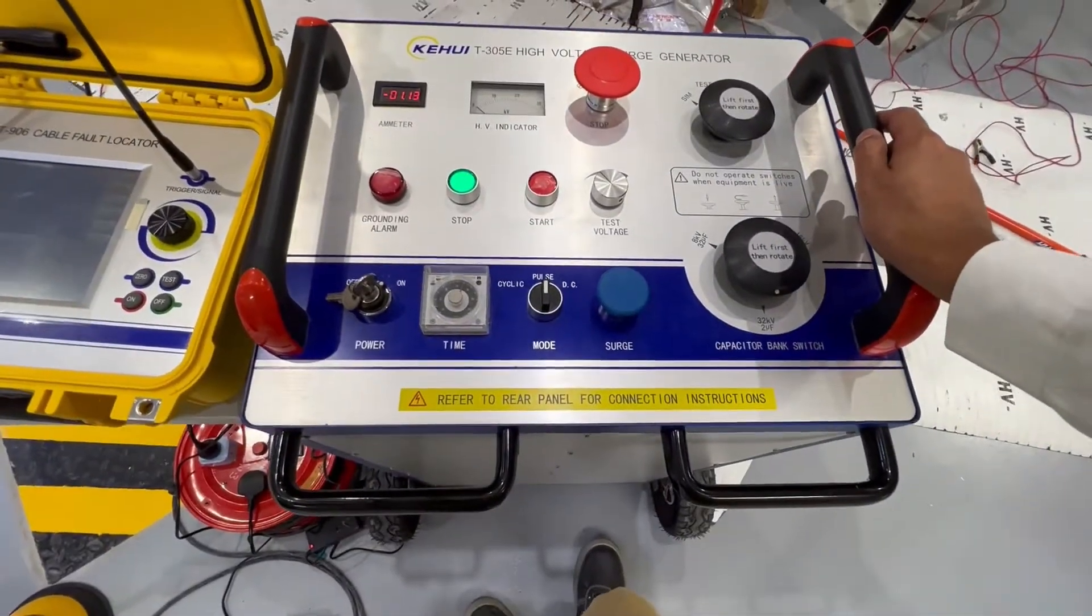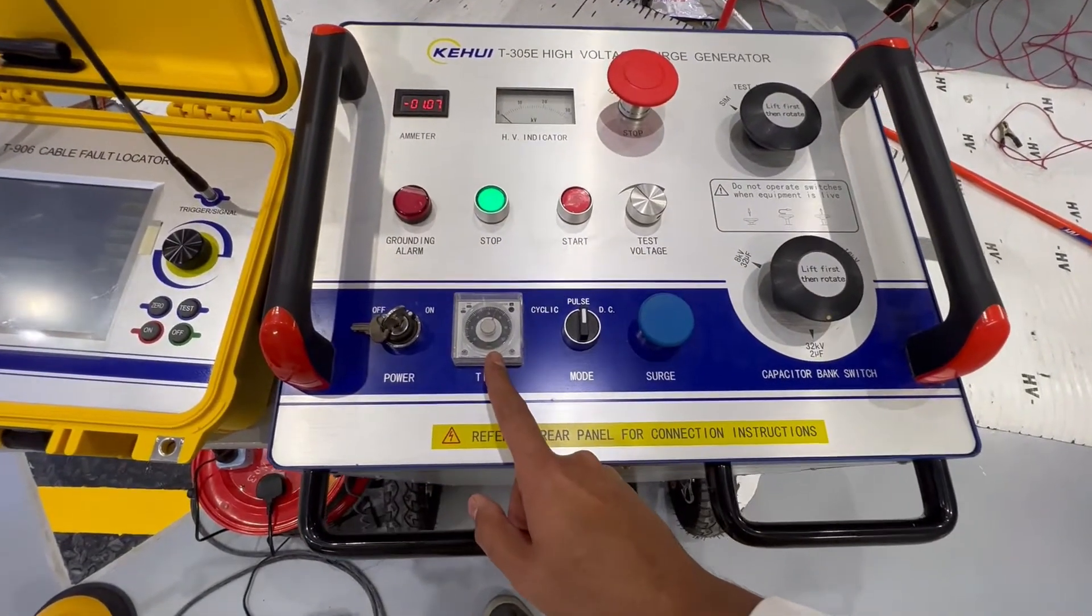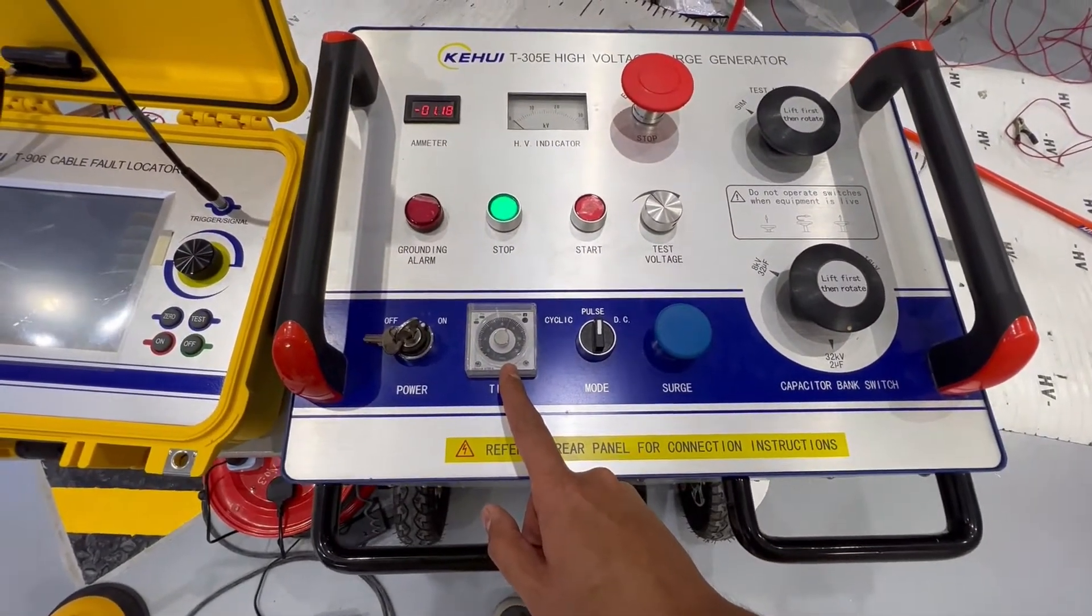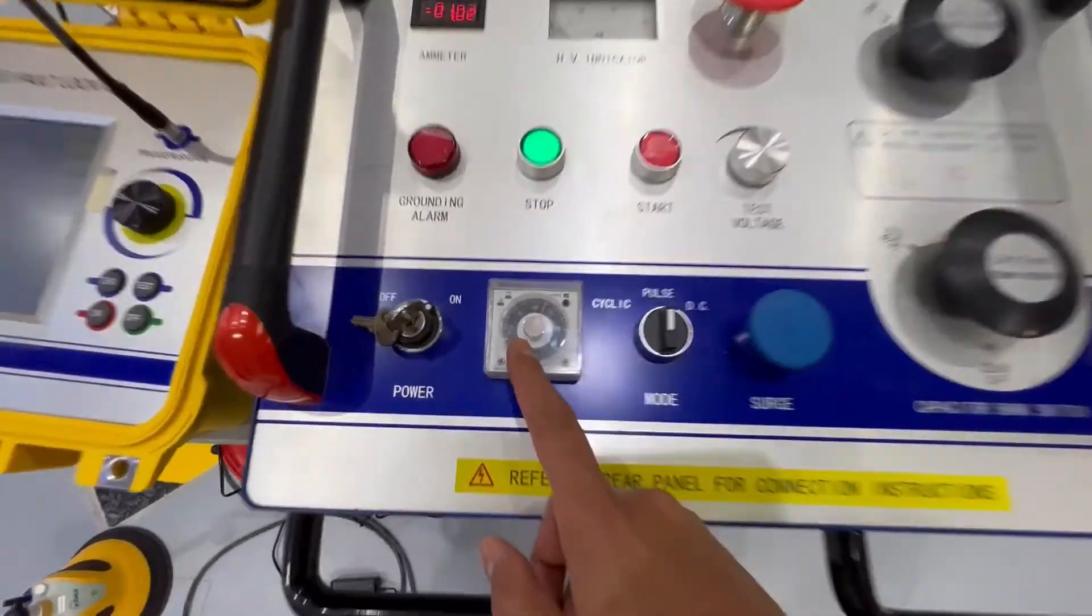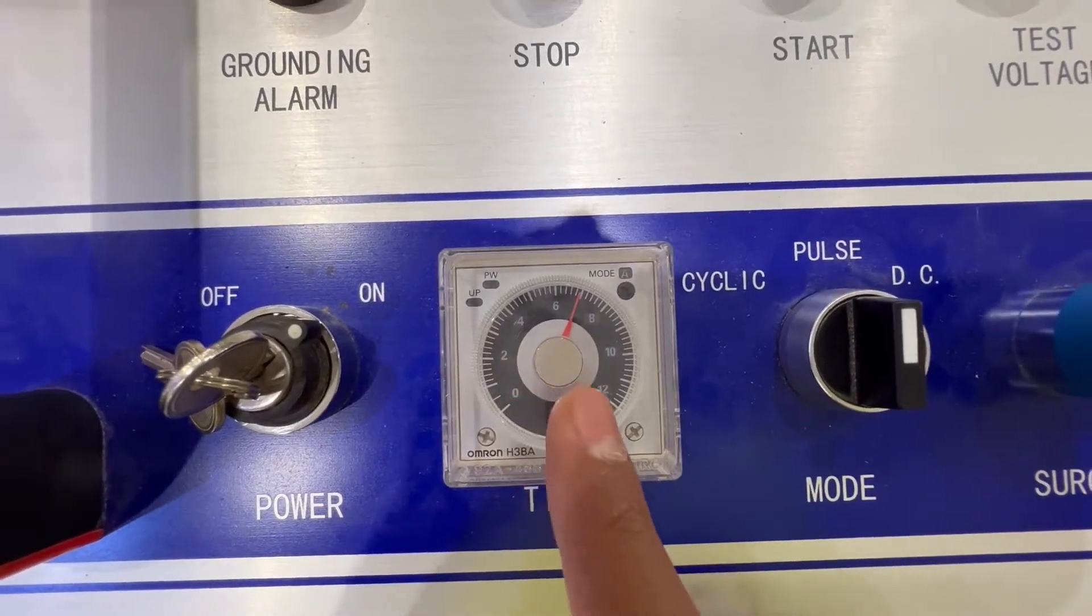You have a timer here. You can set the timer for giving the cyclic pulse based on the time. You can see there are different time levels: 0, 2 seconds, 4 seconds, 6, 8, 10, and 12 seconds.